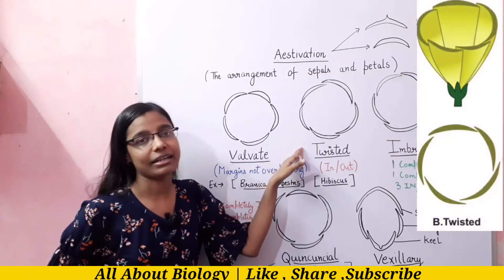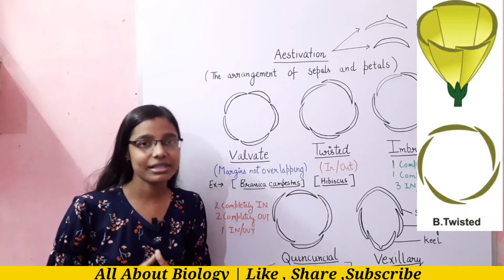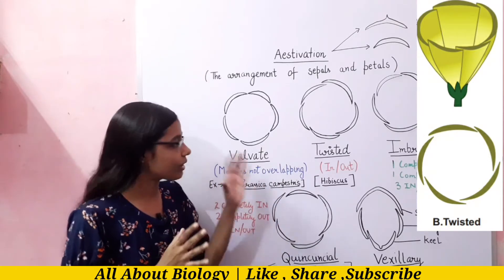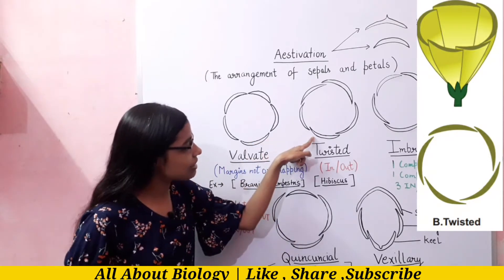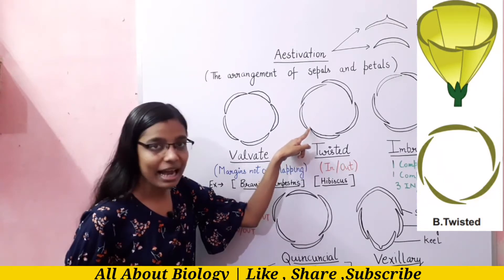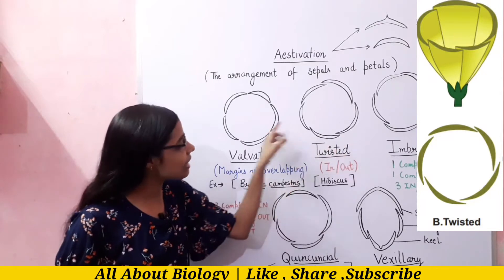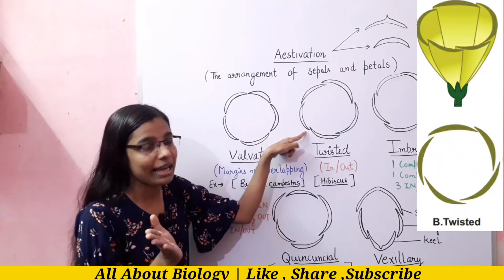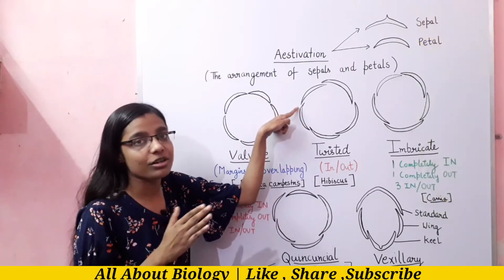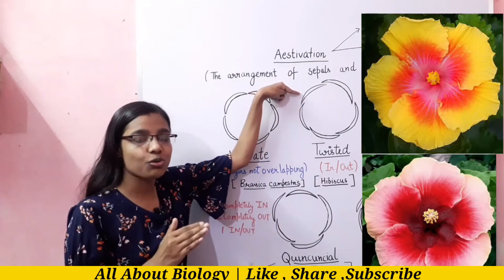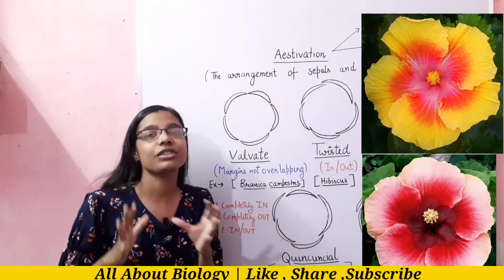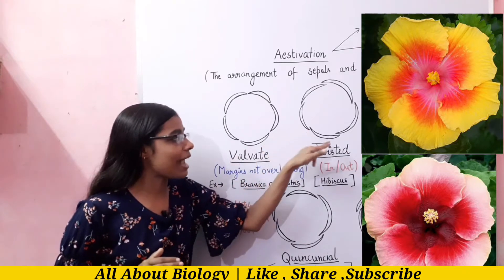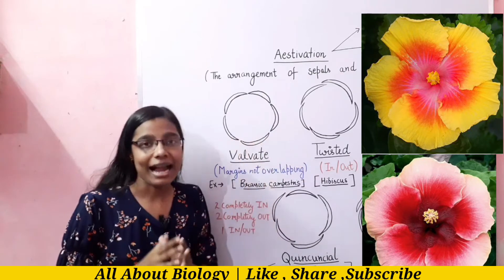Coming to our next type — twisted aestivation. In twisted aestivation, the margins of the petals are in an in-and-out situation. This petal has its margin inside and the other towards the outer side. Similarly, each petal has one edge toward the outer side and the other end toward the inner side, showing the same condition throughout.